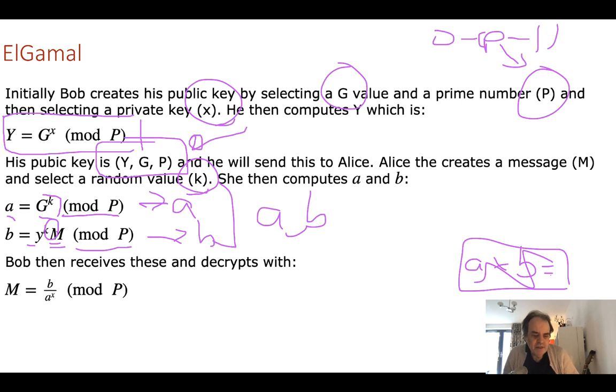When Bob receives this, he takes B and then divides it by A to the power of his private key X and then takes mod P, and hopefully he'll be able to recover the message that Alice sent.